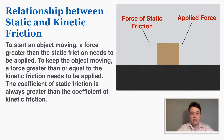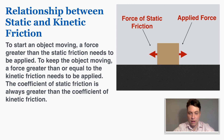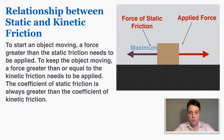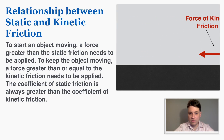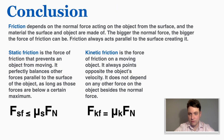To summarize: to start an object moving, a force greater than the maximum static friction must be applied. To keep the object moving, a force greater than or equal to the kinetic friction must be applied. The coefficient of static friction is always greater than the coefficient of kinetic friction. As shown in the animation, pushing a box builds static friction until the maximum is reached — then kinetic friction, which is slightly smaller, takes over as the box begins to move.